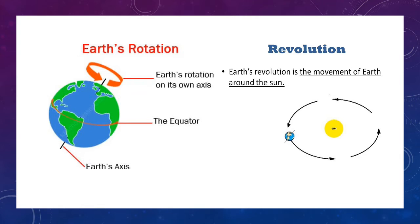The fourth point is time taken: rotation takes 24 hours — the earth completes one rotation in 24 hours — while it completes one revolution in 365 days, that is one year. The fifth and last point is effects: rotation causes day and night, while revolution causes the change of seasons. You can make a table and neatly list these five points and learn them.